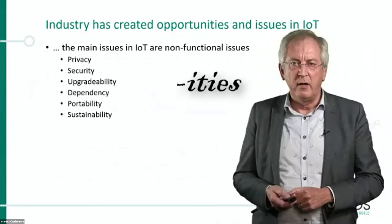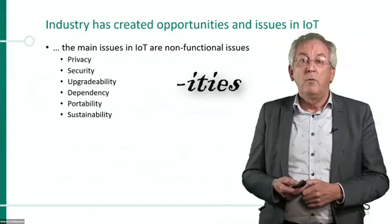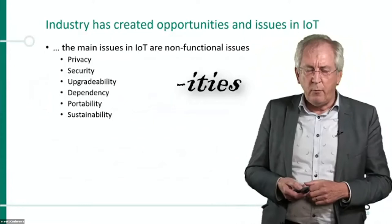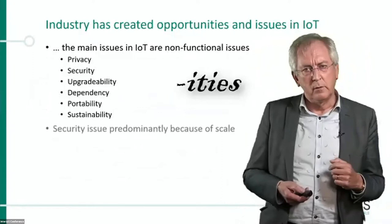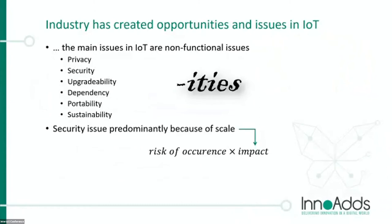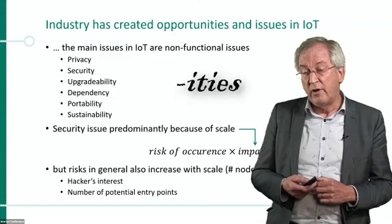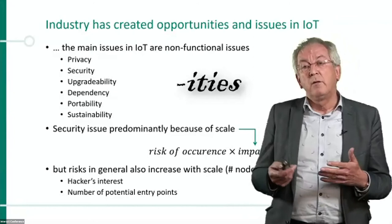The main issues in IoT: we have all these functional advantages, lots of value, but the issues are non-functional ones — privacy, security, upgradability, dependency, portability. You can summarize them as the 'itis.' They have often been neglected in the whole value chain, and repairing them afterwards is extremely difficult. The security issue comes predominantly from scale — even if the risk of occurrence is low, the impact if you can control all those devices from one hack is enormous.